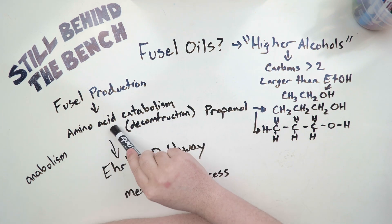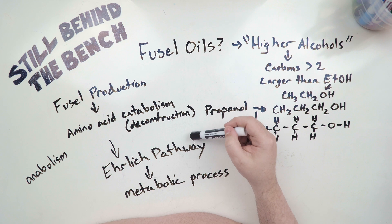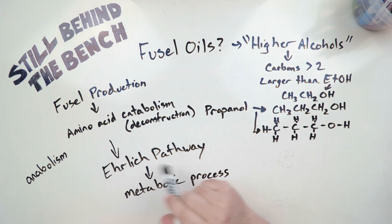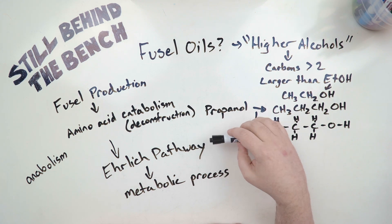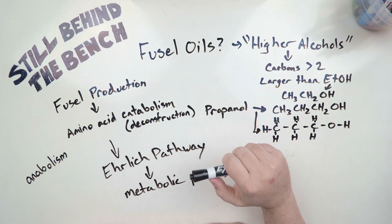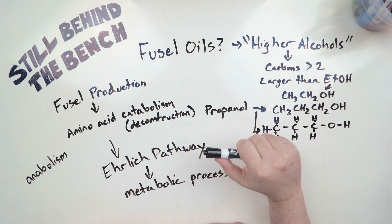Essentially amino acids get broken down in a specific way called the Ehrlich pathway, which is a metabolic process. So we can jump into what the Ehrlich pathway is so we can better understand how these fusels are being produced. It's a very simple pathway, only three steps. But the diagram will be more explanatory.